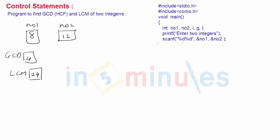GCD is greatest common divisor and LCM is least common multiple.